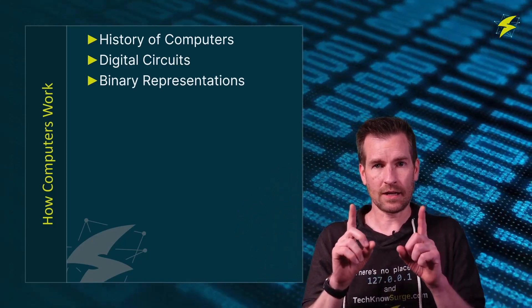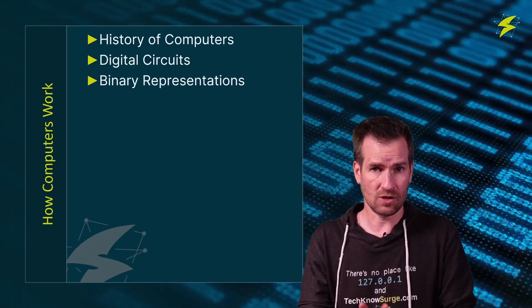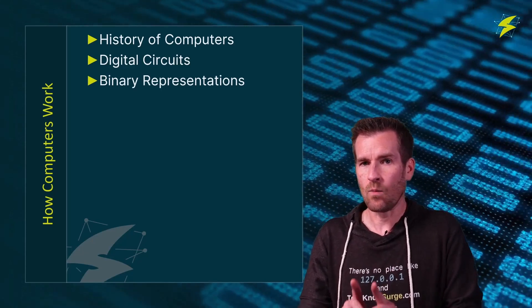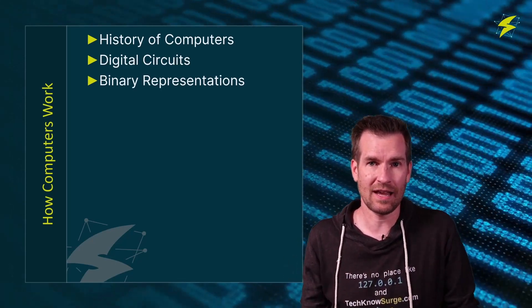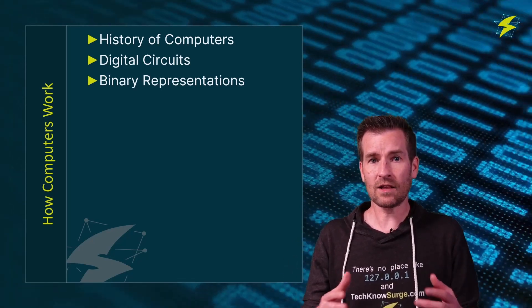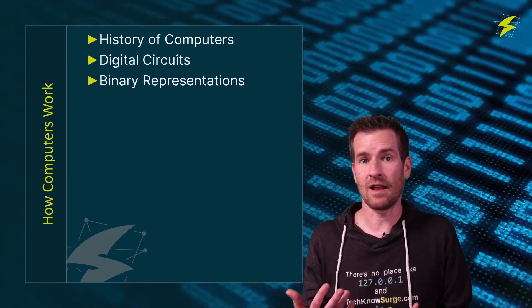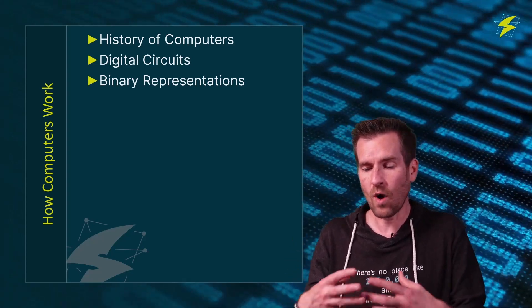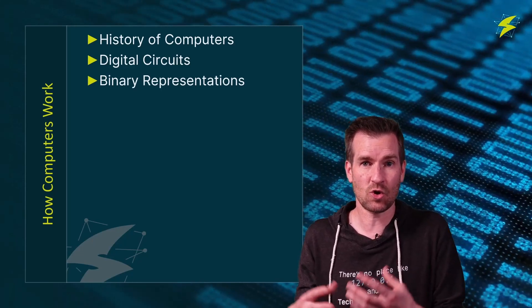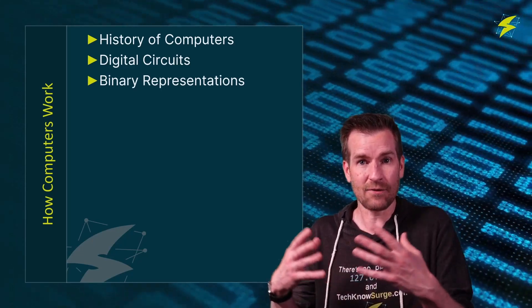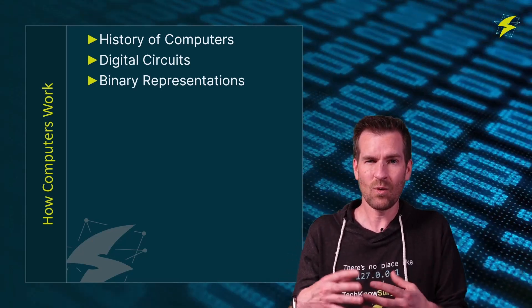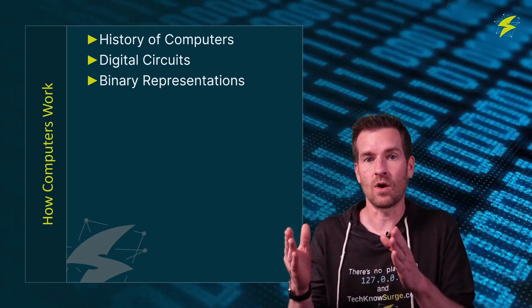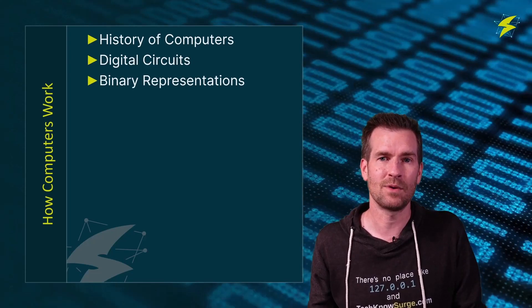Then we're going to take a look a little closer into digital circuits, what they are, and why they use bits, ones and zeros, to be able to calculate information. Then we'll take a look at a few different representations of binary numbers or how ones and zeros, how these bits get translated into graphical representation or how they get translated to get computed. We're just going to take a glance into those different aspects of how a computer works.